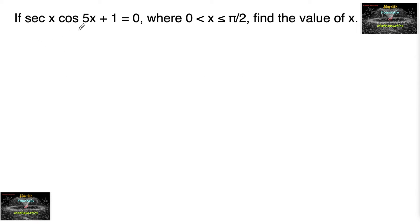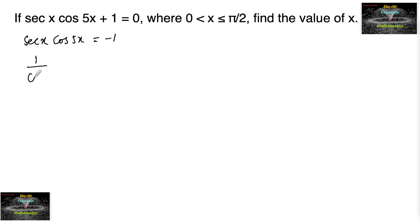If sec x · cos 5x + 1 = 0, where x lies between 0 and π/2 (0 excluded), find the value of x. We can write this as sec x · cos 5x = -1, or (1/cos x) · cos 5x = -1, where cos x cannot be equal to 0.